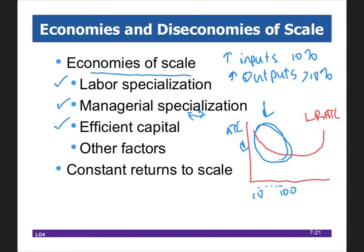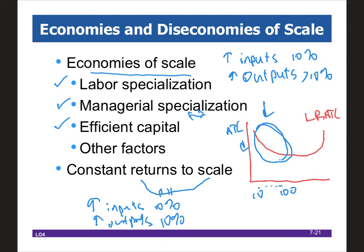Constant returns to scale would be if we had a section of the ATC curve that is constant. The definition: if I increase inputs by 10% and my outputs also increase at exactly 10%, I have constant returns to scale. This is demonstrated graphically by a flat section of the long-run ATC.